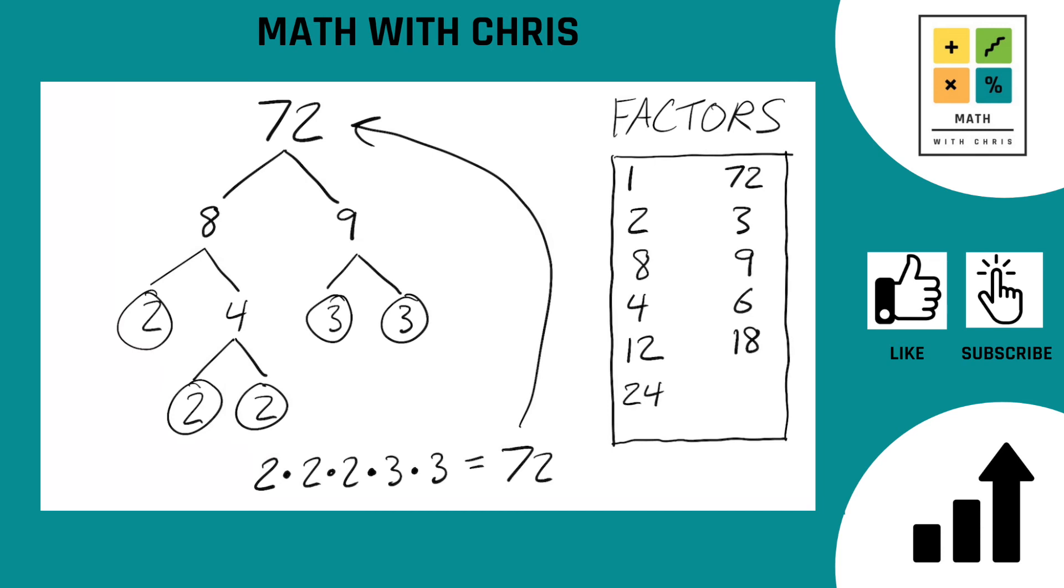And let's also try two times two times three times three. Two times two times three times three. That's thirty-six. We do not have that either, so put thirty-six in there.